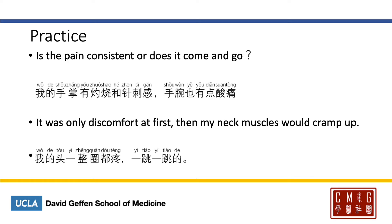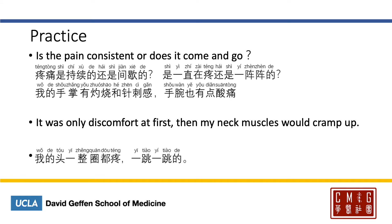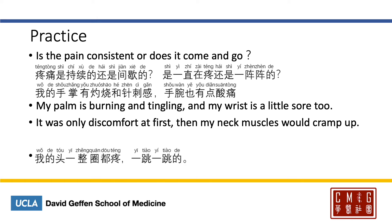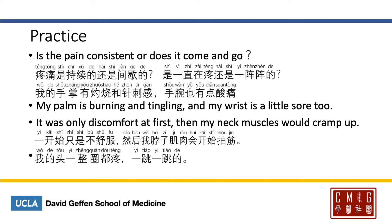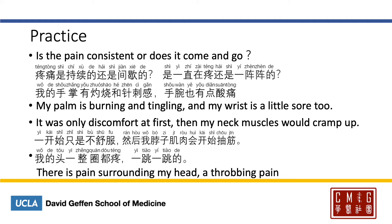Here are some practice sentences. Is the pain constant or does it come and go? 疼痛是持续的还是间歇的? Or you may say 是一直在疼还是一阵阵的? If your patient says 我的手掌有灼烧和针刺感，手腕也有点酸痛 — in English, that would be: My palm is burning and tingling, and my wrist is a little bit sore too. The translation for 'It was only discomfort at first, then my neck muscle would cramp up' is 一开始只是不舒服，然后我的脖子肌肉会开始抽筋. And 我的头一整圈都痛，一跳一跳的 means: There's pain surrounding my head, and it's a throbbing pain.